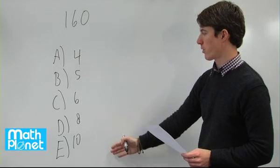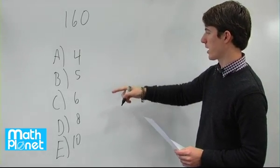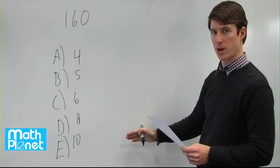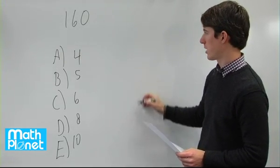So each of these will give us a whole number if we divide 160 by each of these except for one. So we can try the different problems and see if we get integers until we get one that doesn't work.